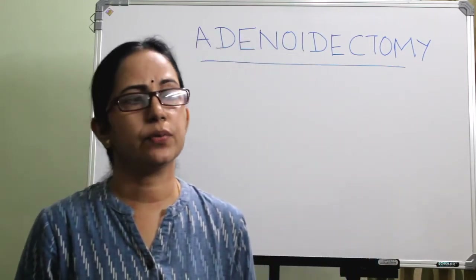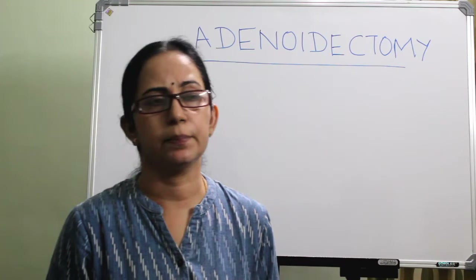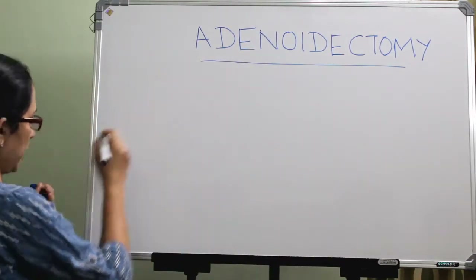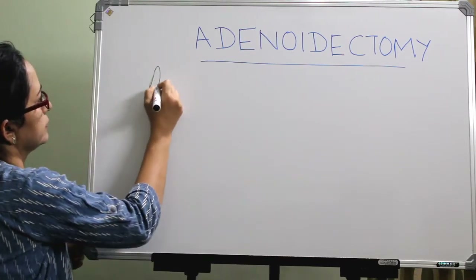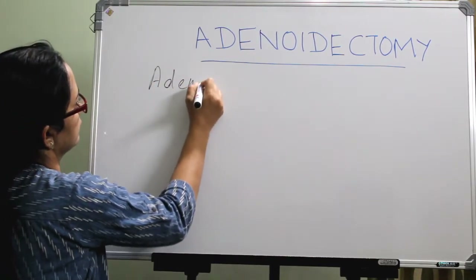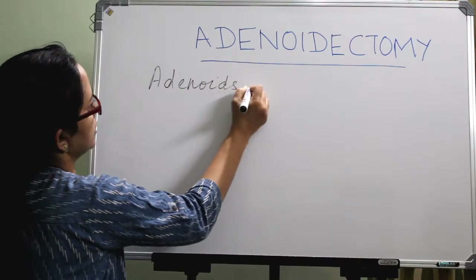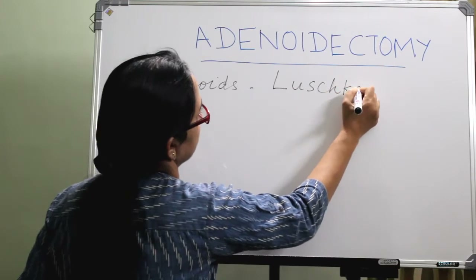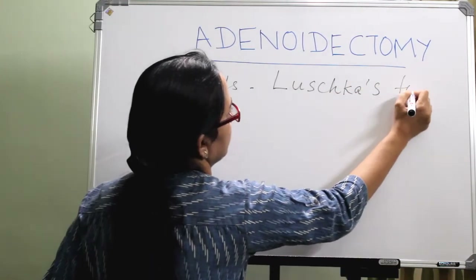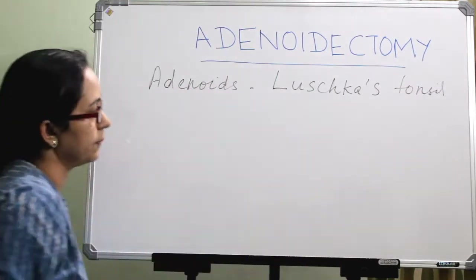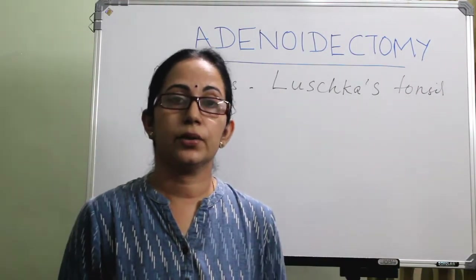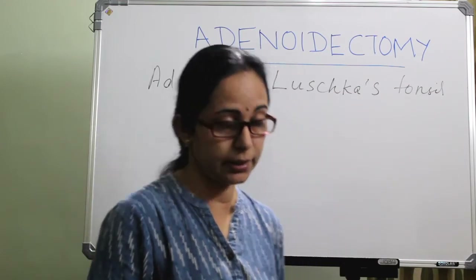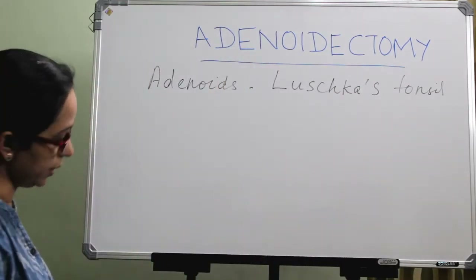The anatomy of the nasopharynx was already explained in a previous class. Adenoids are otherwise called Lushka's tonsil — the synonym is Lushka's tonsil, which can be asked in MCQs. Where are the adenoids located? They are in the nasopharynx, at the junction of the roof and the posterior wall.